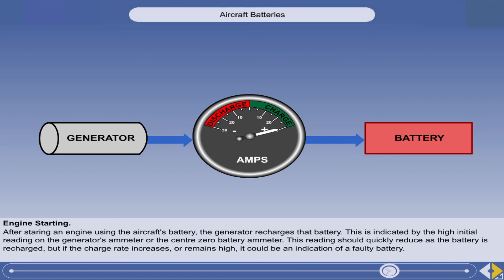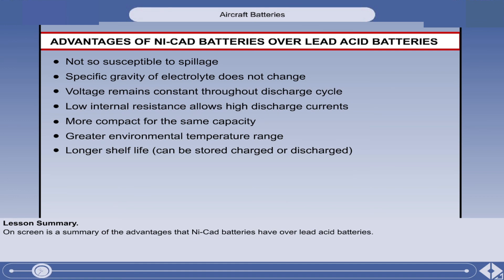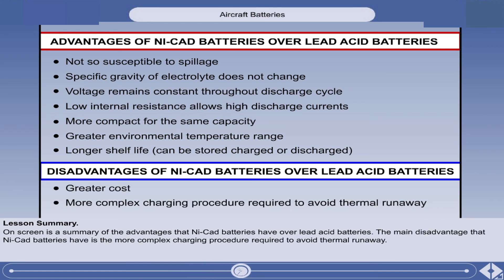A continuing high charge rate could result in a battery overheating and subsequent damage. That is the end of the lesson. On screen is a summary of the advantages that NICAD batteries have over lead acid batteries. The main disadvantage that NICAD batteries have is the more complex charging procedure required to avoid thermal runaway.